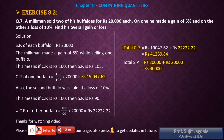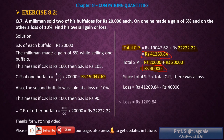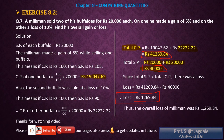Comparing the two values: CP = Rs 41,269.84 and SP = Rs 40,000. Since CP is greater than SP, there is a loss. The loss = CP − SP = 41,269.84 − 40,000 = Rs 1,269.84, which is the overall loss for the milkman.